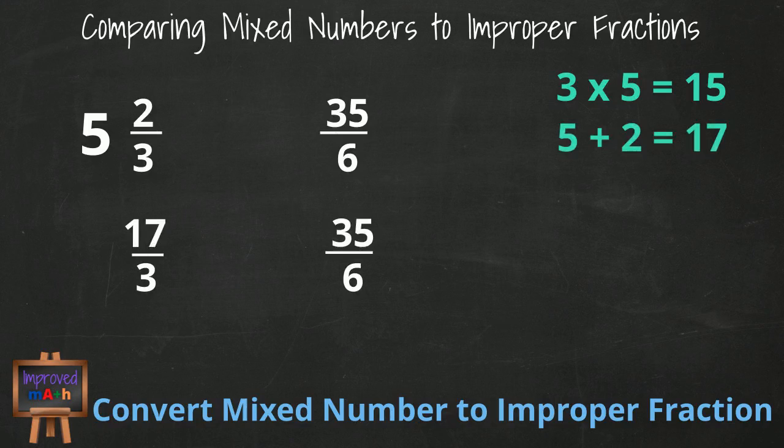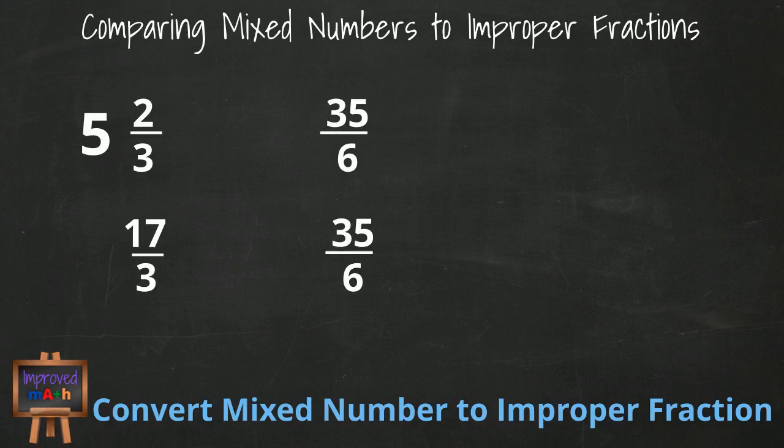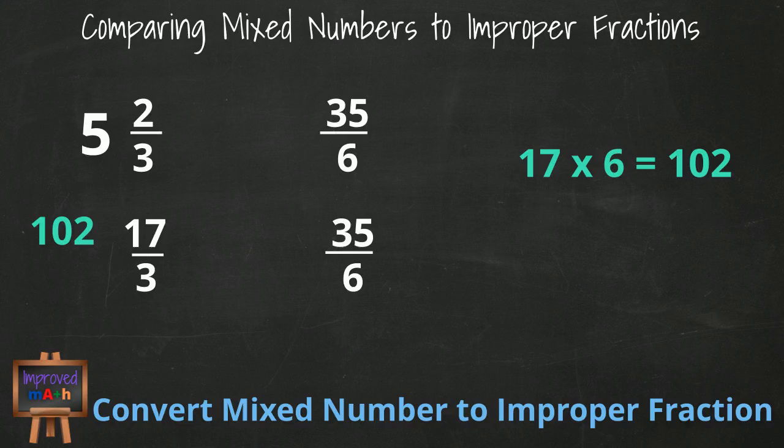Remember, we can use cross multiplication and multiply the numerator of the first fraction by the denominator of the second fraction and get a total of 102. We can multiply the numerator of our second fraction by the denominator of our first fraction and get 105. 5 and 2/3 is less than 35/6.